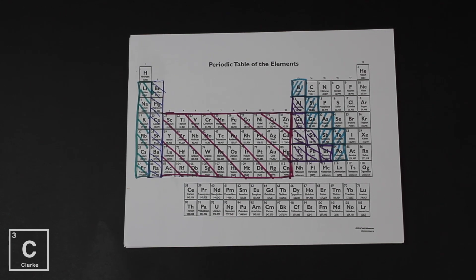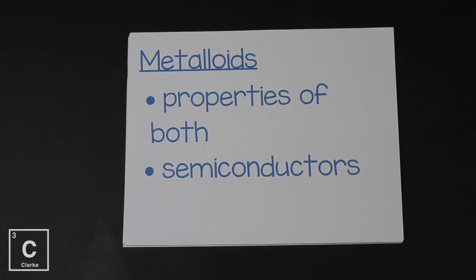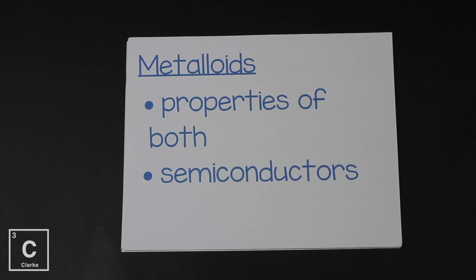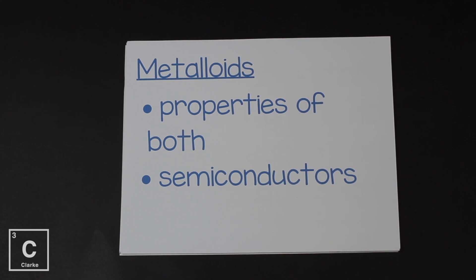Now here we are back to that stair-step metalloids. Metalloids have properties of both - that's why they're called metalloids. They're kind of like metals and kind of like non-metals. They're shiny, but they're brittle. We also call them semiconductors because they can kind of conduct. Sometimes they just need to be under special conditions to be good conductors.